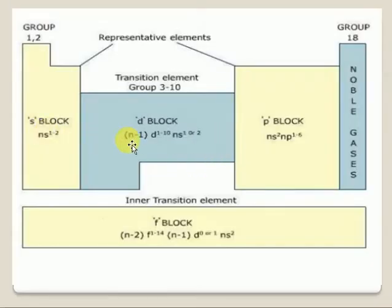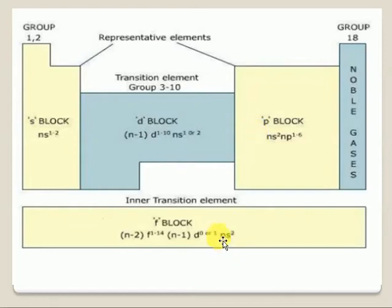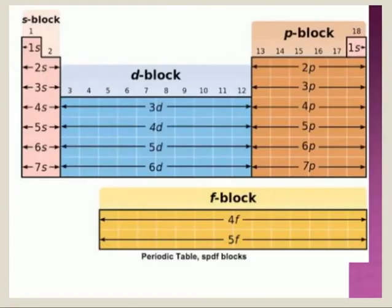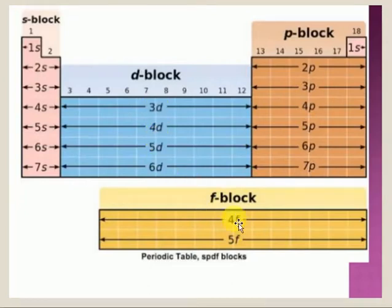Looking at the periodic table: S-block elements, D-block elements, P-block elements, Noble gases, and F-block elements at the bottom. Alkali metals, alkaline earth metals are in S-block. D-block contains transition metals. P-block contains representative elements. F-block contains inner transition metals, classified as 4f and 5f. D-block is classified into 3d, 4d, 5d, and 6d. We will discuss D-block and F-block elements in the next chapter.